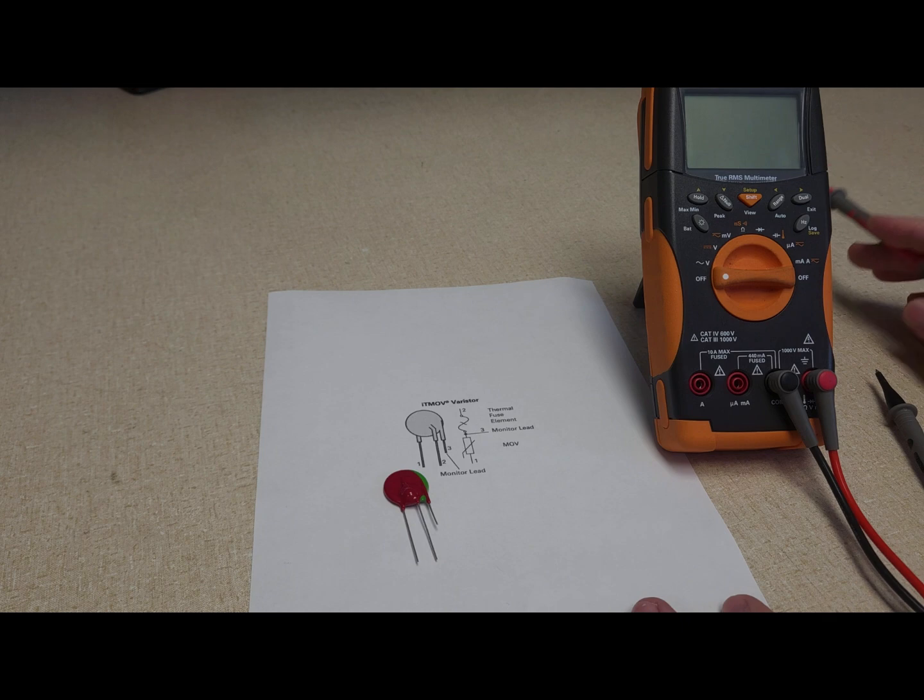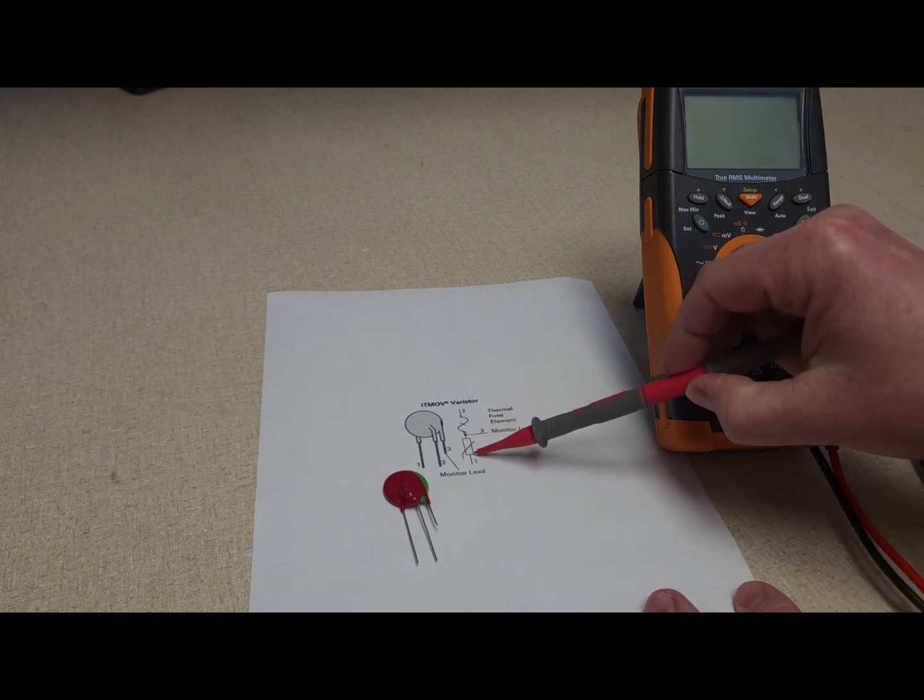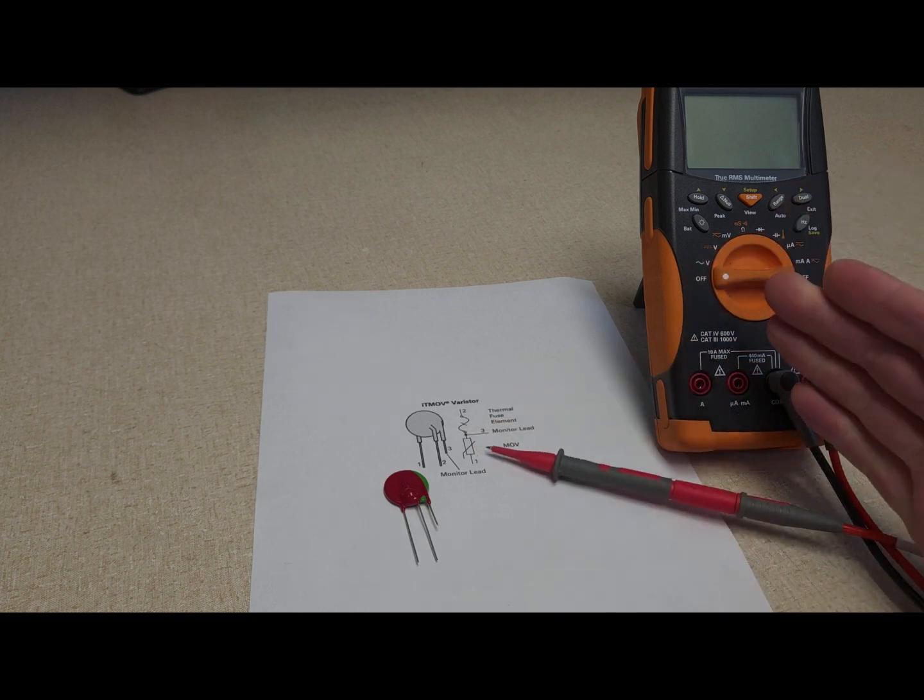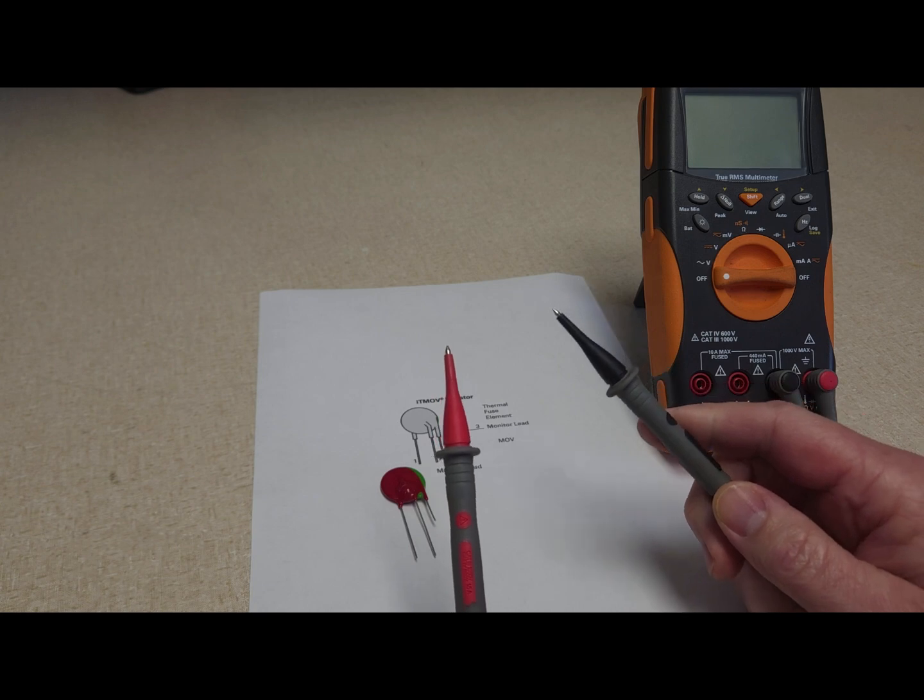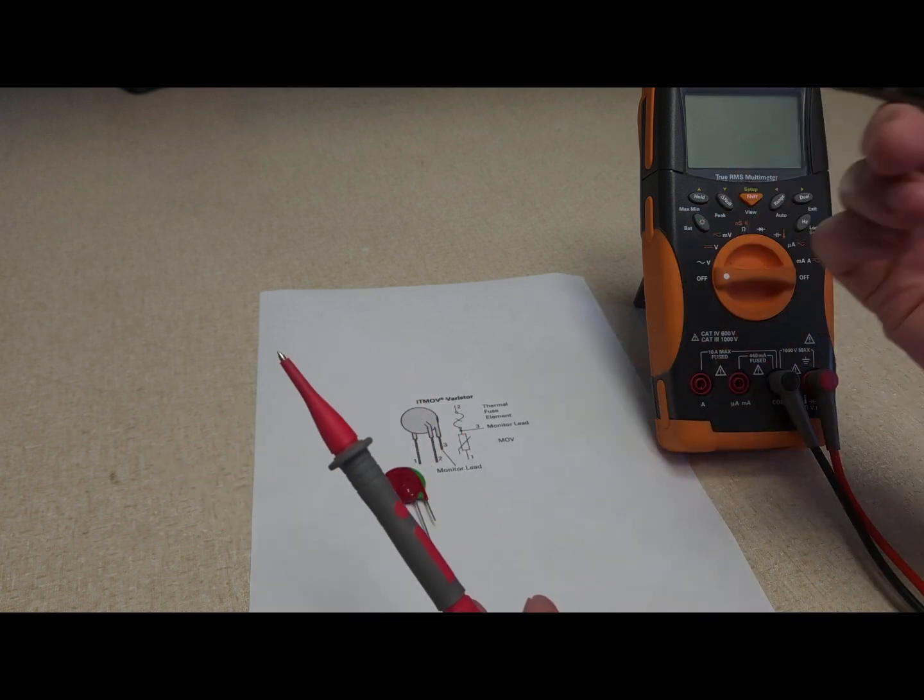In order to test the MOV you really can't test the MOV function itself because it's designed to be open, so that means they're disconnected internally whenever the voltage is below its rating.